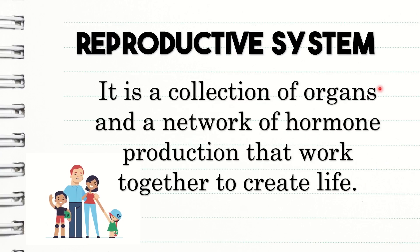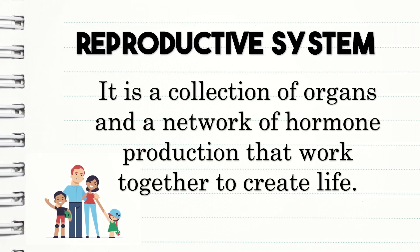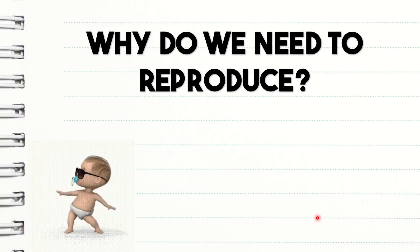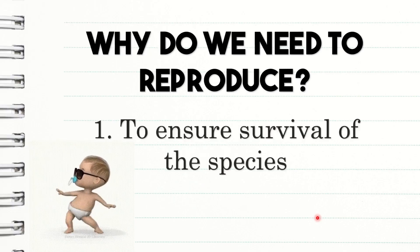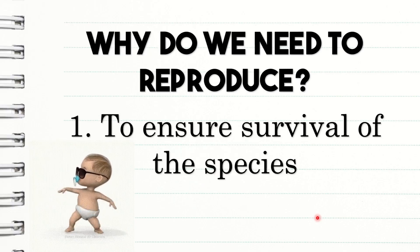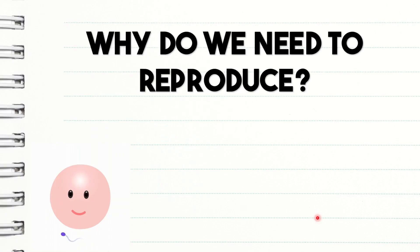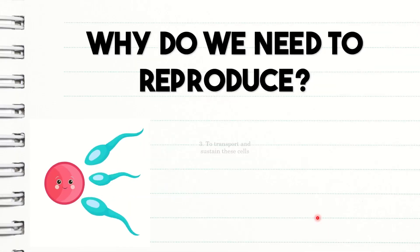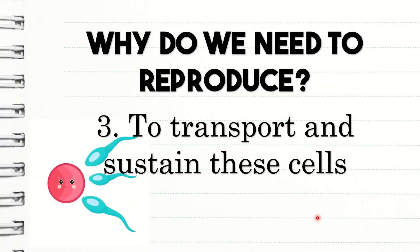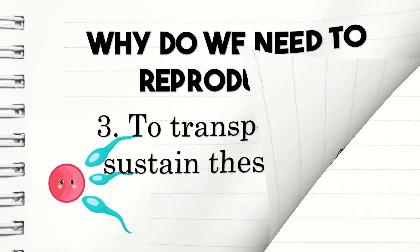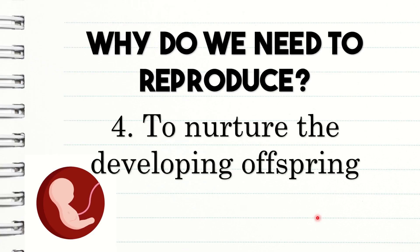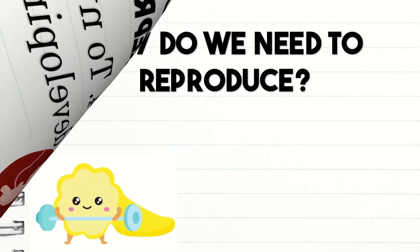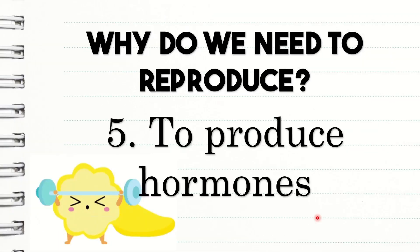The reproductive system is a collection of organs and a network of hormone production that work together to create life. But why do we need to reproduce? Number one, to ensure survival of the species. Number two, to produce egg and sperm cells. Number three, to transport and sustain these cells. Number four, to nurture the developing offspring. And lastly, to produce hormones.